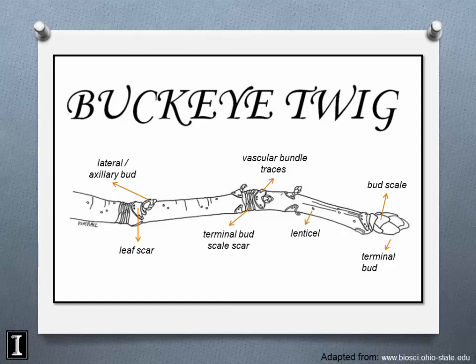These small dots on the leaf scar are vascular bundle traces — the exchange points for photosynthate, water, and nutrients between the twig and the leaf. Counting these vascular bundle traces can sometimes help you identify a tree down to the species level.